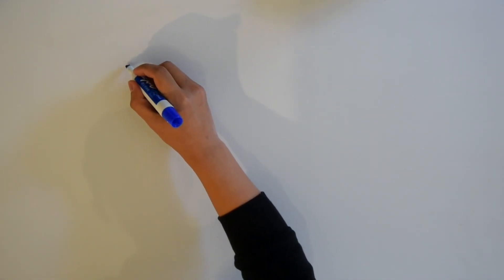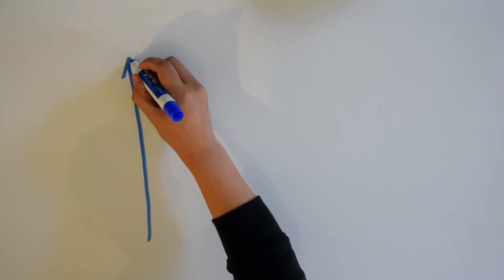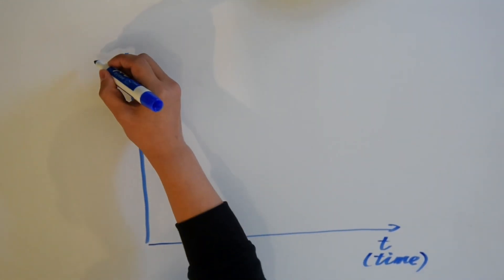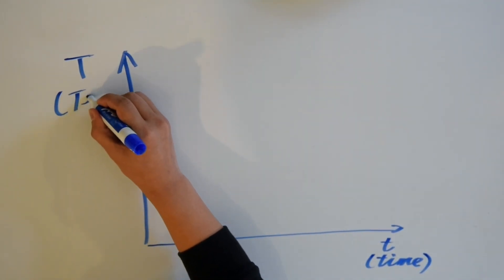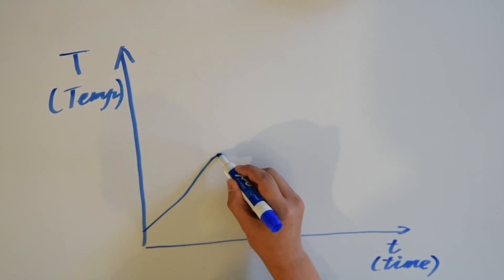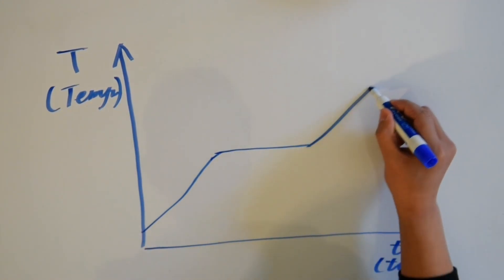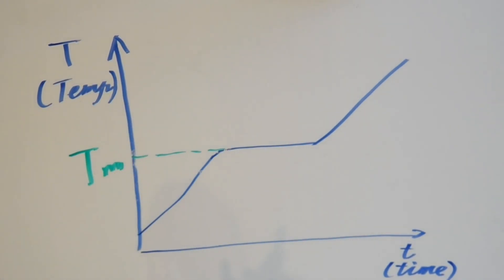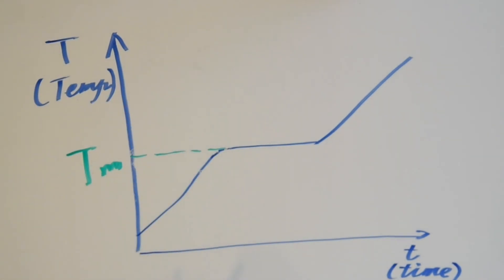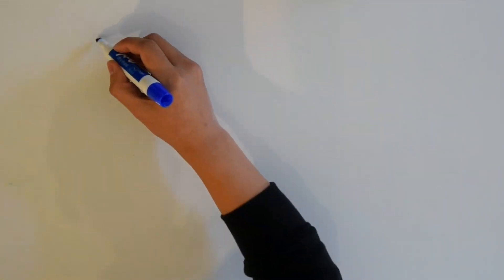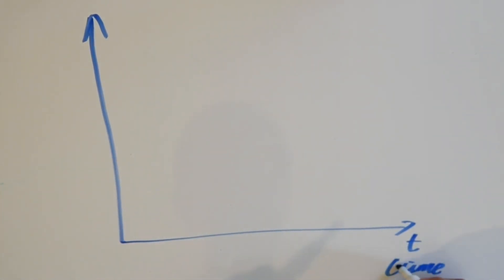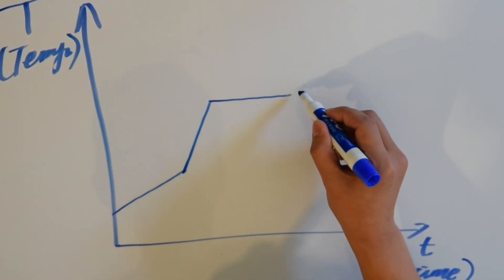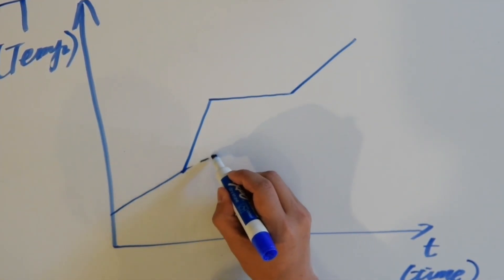Another interesting phenomenon about these two temperatures can be seen on the plot of temperature change versus time. When an object is heated, its temperature increases. When it reaches the melting point, it will stay there for a while before increasing again. However, at the glass transition temperature, it will not stop even for a second — the temperature will keep increasing, but the increasing rate will change.